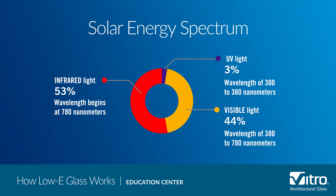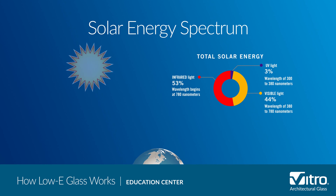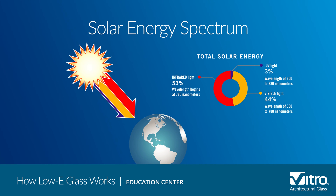Ultraviolet light, which is what causes fabrics and wall coverings to fade, has wavelengths between 300 to 380 nanometers. Visible light occupies the part of the spectrum between 380 and 780 nanometers. Infrared light, which is transmitted as heat into a building, begins at wavelengths of 780 nanometers. Solar infrared is commonly referred to as shortwave infrared, while heat radiating off of warm objects has longer wavelengths than the sun and is referred to as long-wave infrared.